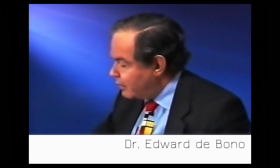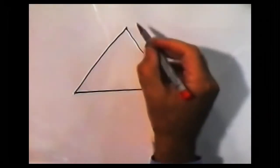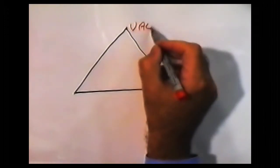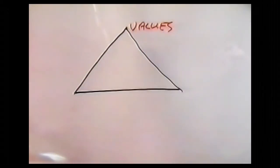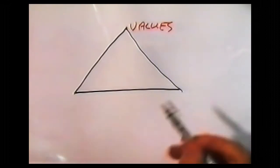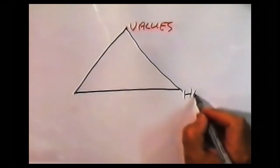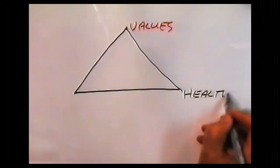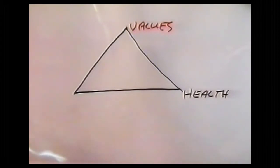Let's imagine a triangle, and at the top of that triangle we're going to put values. Then at one of the base angles we're going to put health, and the other base angle we put thinking.